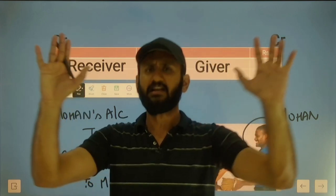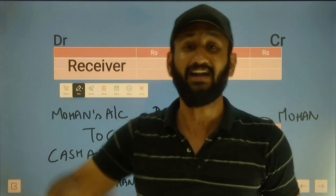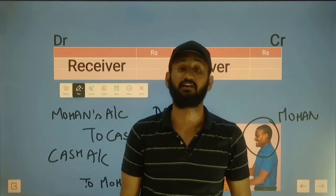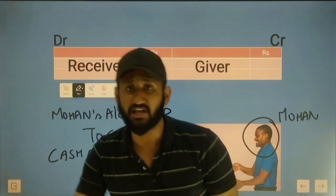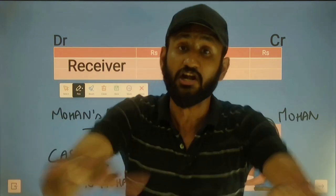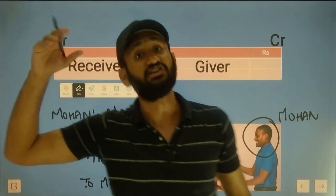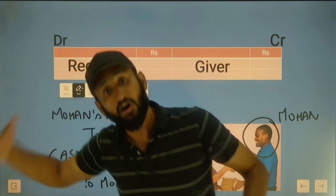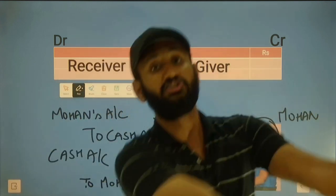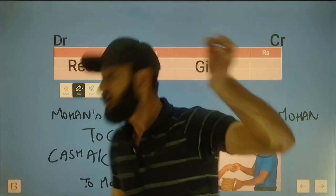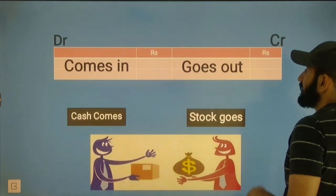This account is also a real account. If cash comes in, debit it; if cash goes out, credit it. If machinery comes in, debit machinery account; if machinery goes out, credit it. Next rule - the real account has two different types: one is tangible and one is intangible.